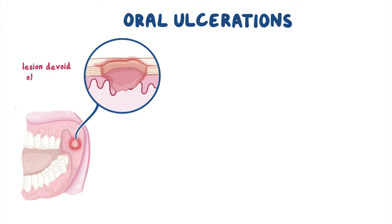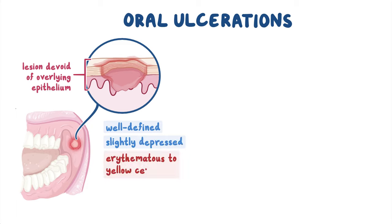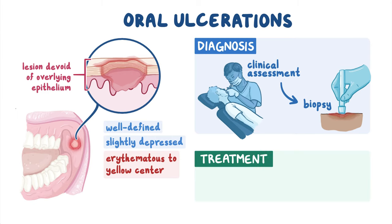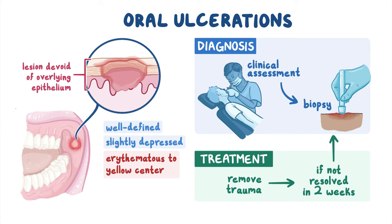As a quick recap, an oral ulceration is a lesion devoid of overlying epithelium. Generally, ulcers appear as well-defined, slightly depressed lesions with an erythematous to yellow center and may vary by etiology. Diagnosis begins with a clinical assessment and can be definitively made after a biopsy of the ulcer and surrounding tissue. Treatment is based on the underlying cause, such as removing the source of trauma. If the ulcer does not resolve within two weeks, a biopsy must be performed, as a more serious condition such as oral cancer may be present.